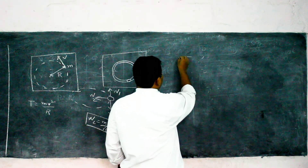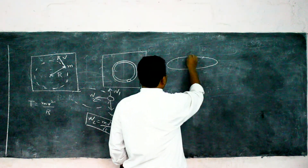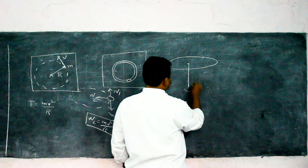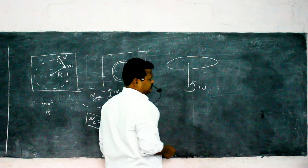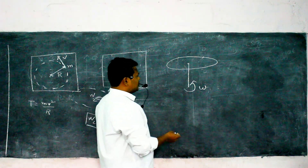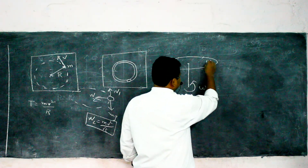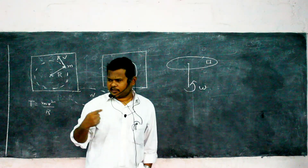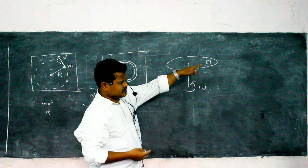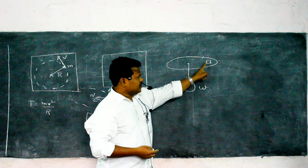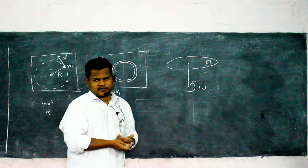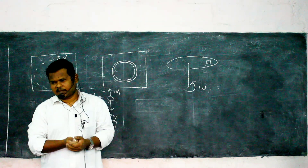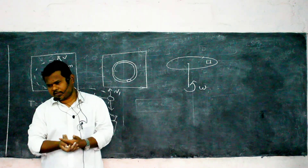Consider a table rotating about a vertical axis with angular velocity omega. If I place a block on this table, the block also rotates along with the table. For circular motion, centripetal force is definitely required.